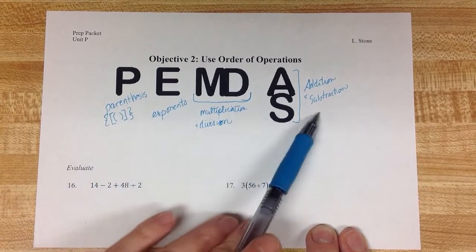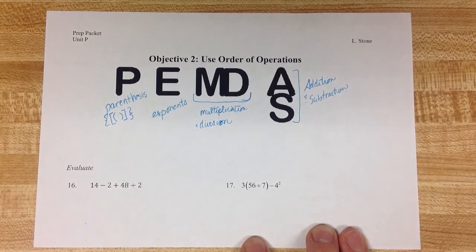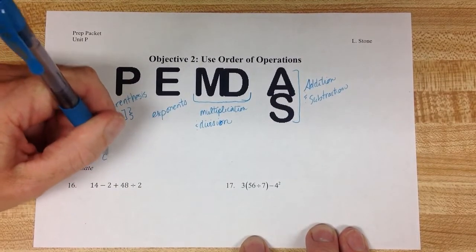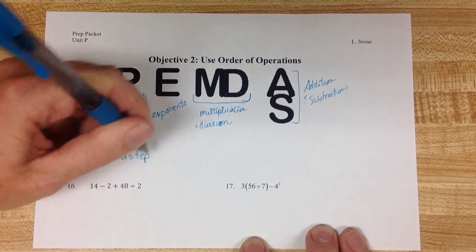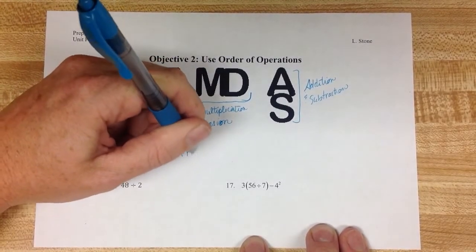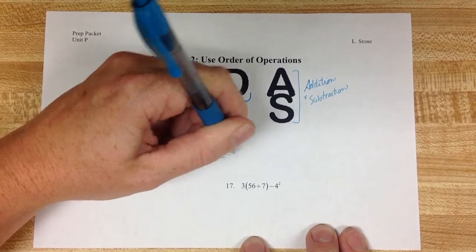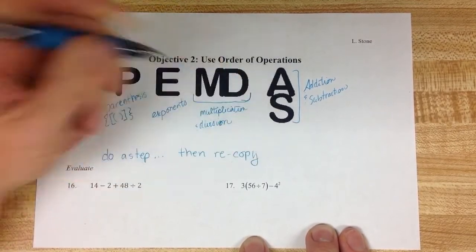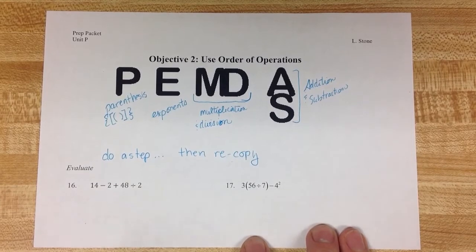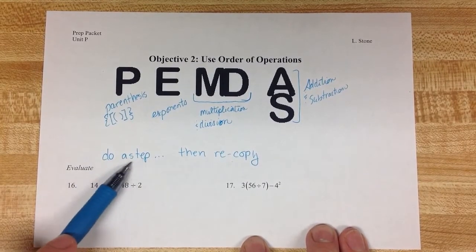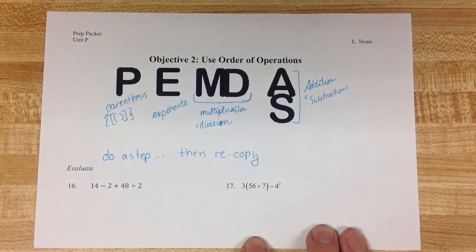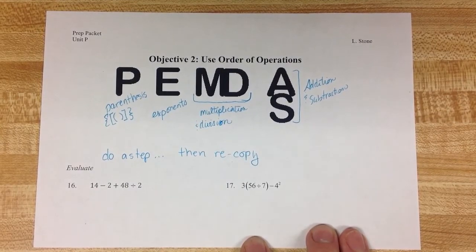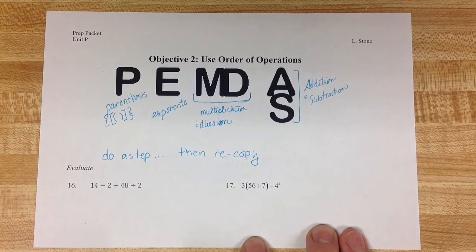This tells us the hierarchy or the order in which we're going to do the problems. The process that we're going to use for this is do a step, then recopy. As you get more practice and are getting more questions right, you may get to a point where you can maybe do two steps and then recopy. But as we're starting with these first initial problems, I'm going to be showing you each step and I expect you to do the same.